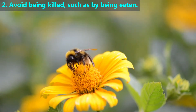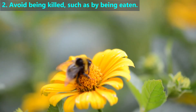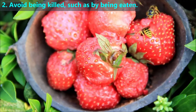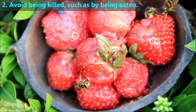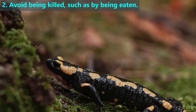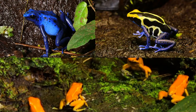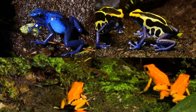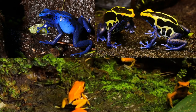Other animals don't try to hide, but instead send a warning to discourage a predator from attacking them. Almost all animals know that black and yellow colors mean an animal is poisonous, such as having venom. Even if we've never seen this salamander before, its colors signal danger. Likewise, these bright colored frogs have poison on their skin, and even a little of that poison is enough to kill a large animal.